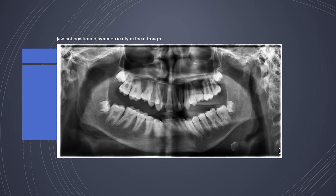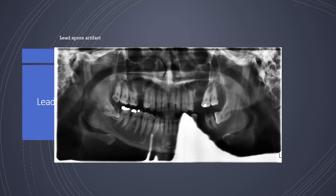If the jaw is positioned asymmetrically — meaning the patient is not properly centered or moved during exposure — you will notice blurring in one particular area and one side of the jaw appearing wider than the other. Lead apron artifacts occur if the patient has a short neck or is not positioned properly, causing the apron to cast a shadow in the image. This results in a non-diagnostic film that must be repeated.